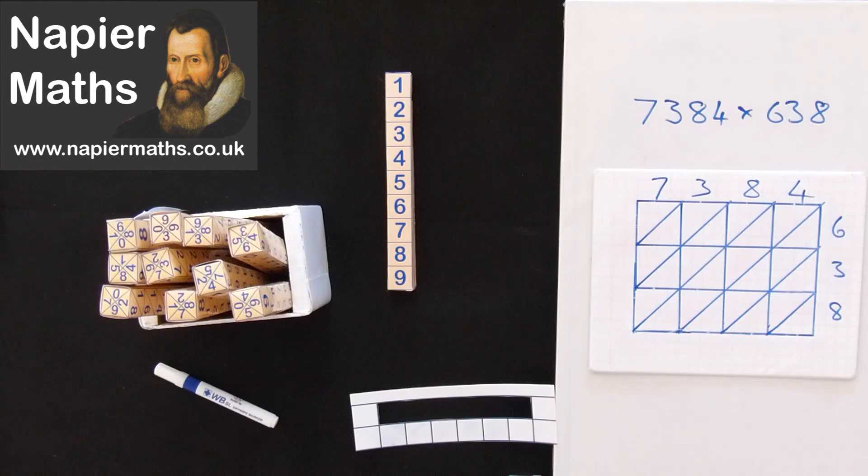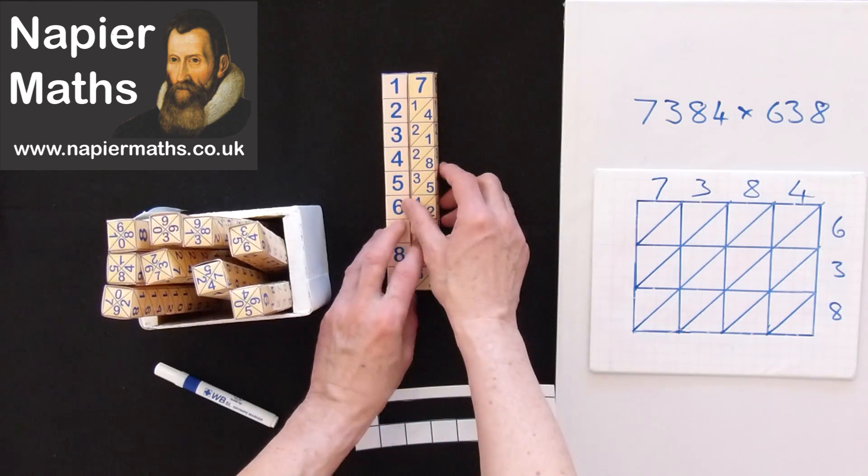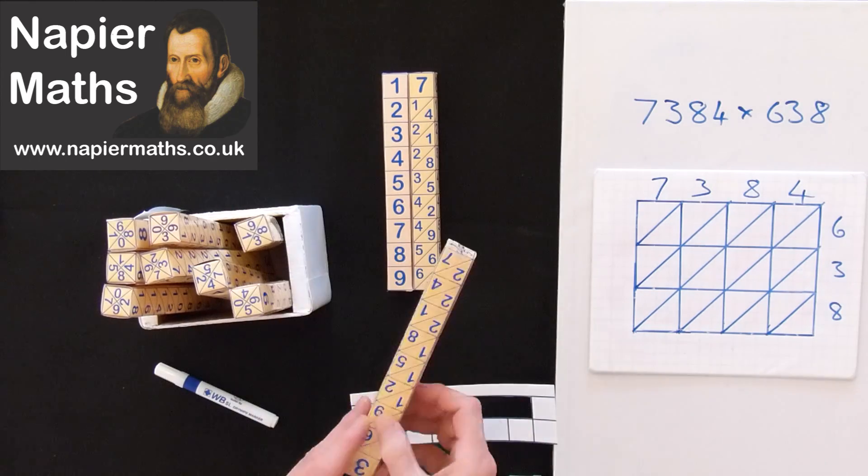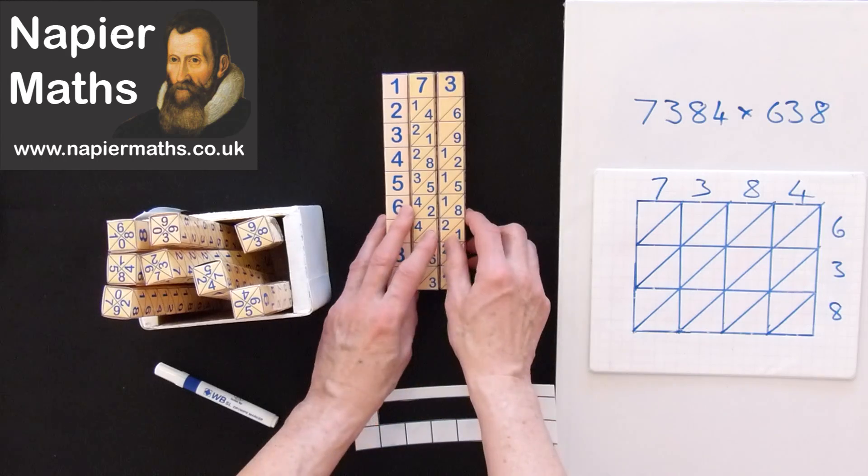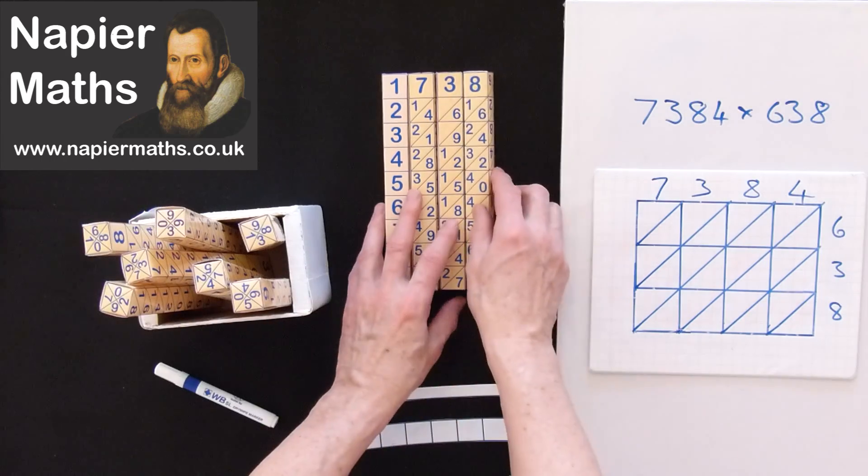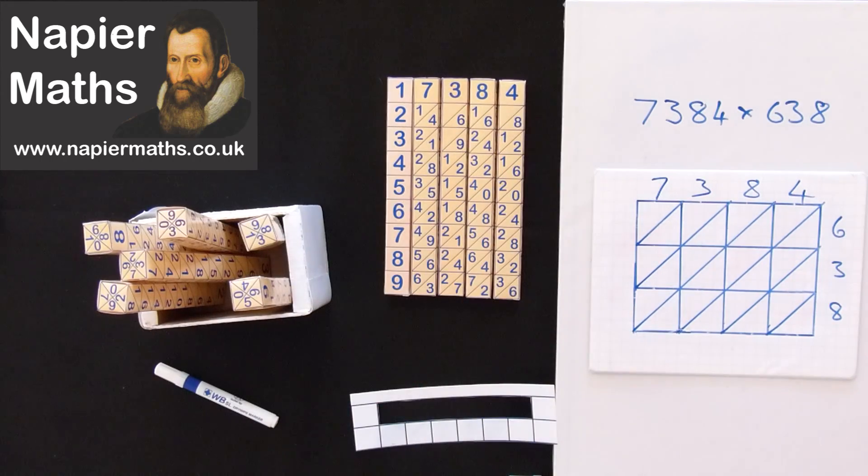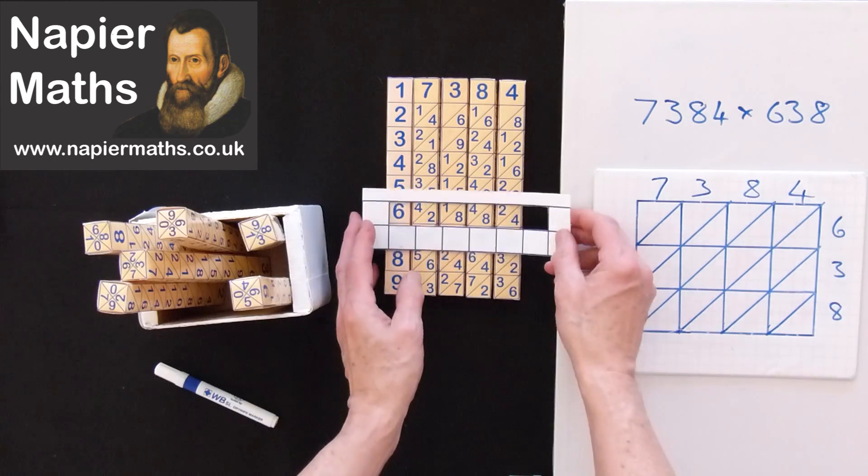The first bone we require is 7, so we pick a 7. Pick a 3. Pick an 8. And the final bone is 4. And that's our bone selected. Now, for the top line there, we're going to need a 6 for the 600. So we go down to the 6.